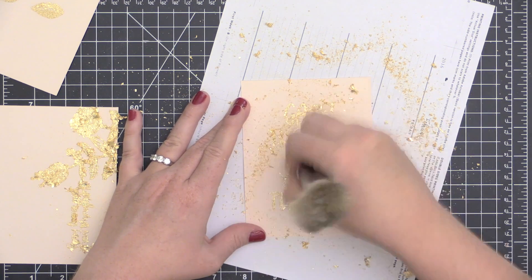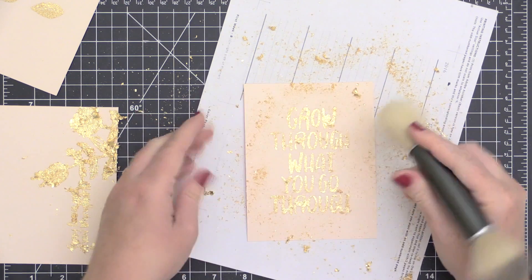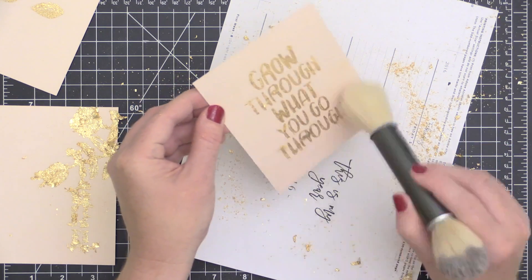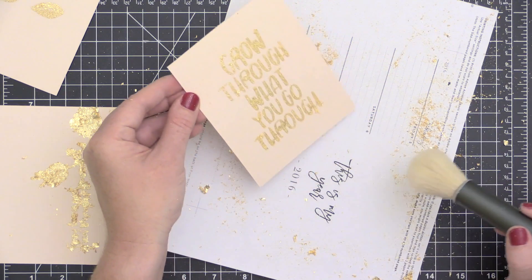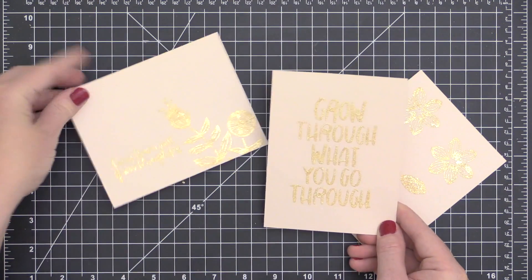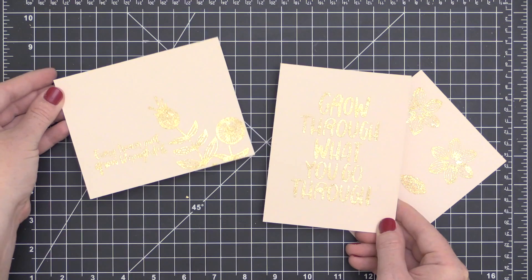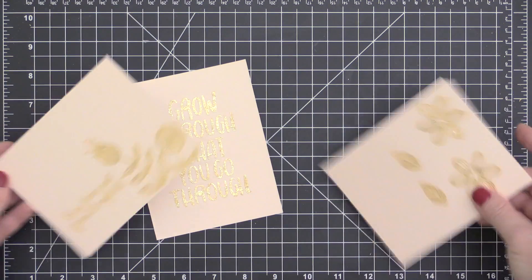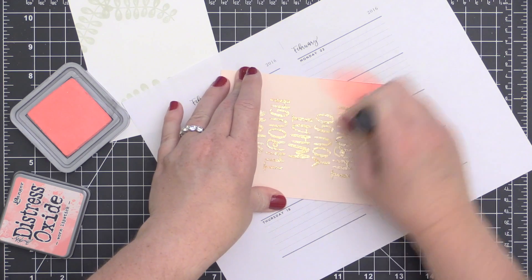By using that kind of coarser brush to brush away the excess, and then I'll wipe these off with a Swiffer dusting cloth or a microfiber cloth, I am left with these beautiful gilded images. This is a little bit more foily looking than an embossing powder.